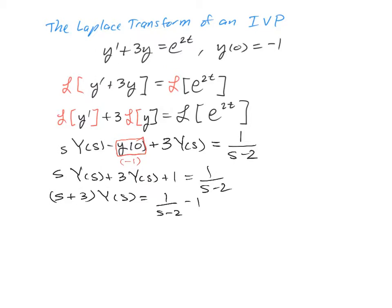Some people like to keep these as separate terms. I like to combine them into one. That's going to be 1 minus s minus 2 over s minus 2, which is negative s plus 3 over s minus 2.